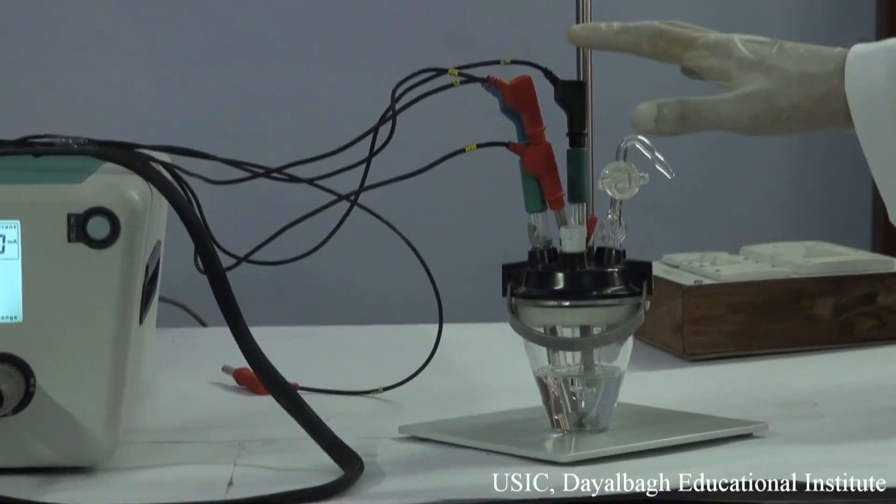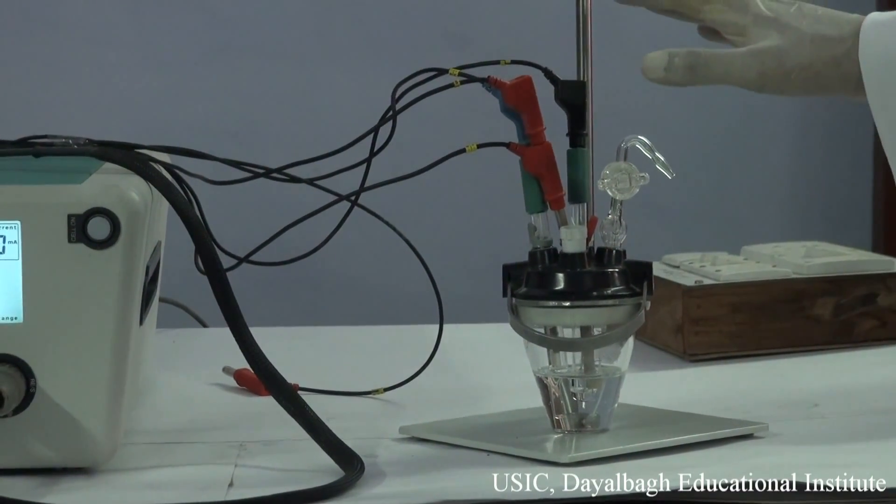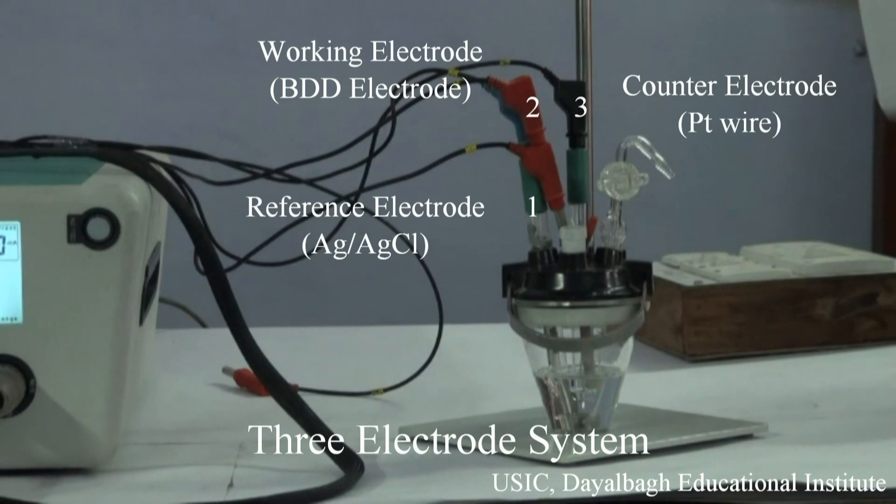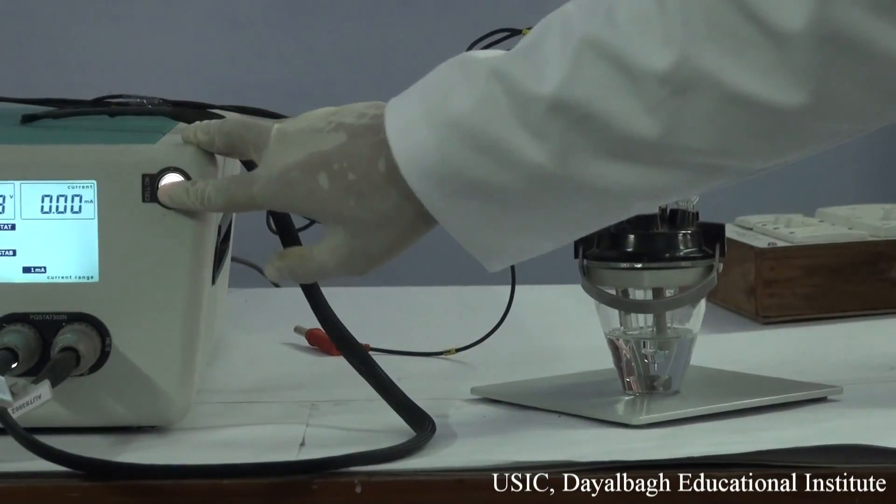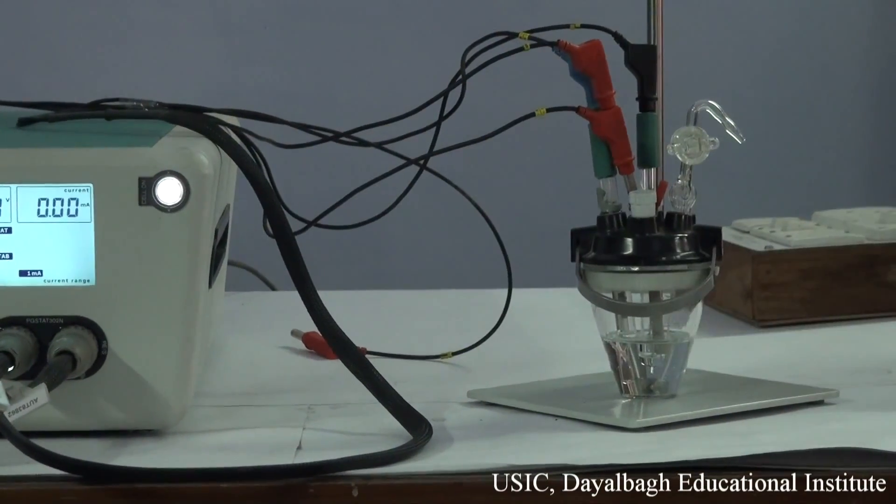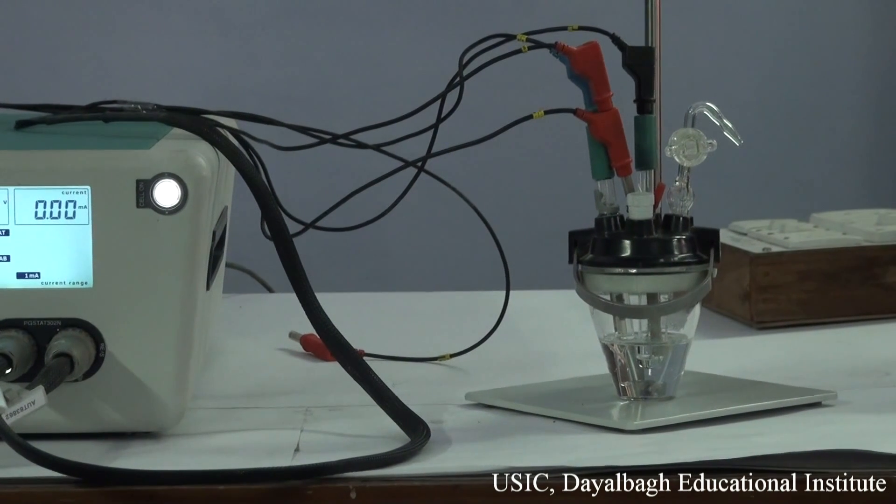Now, this is the three electrode setup which has been ready for running the experiment. Now, we will switch on the instrument, that is autolab. After that, we will perform the experiment.